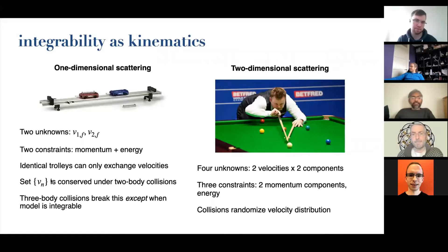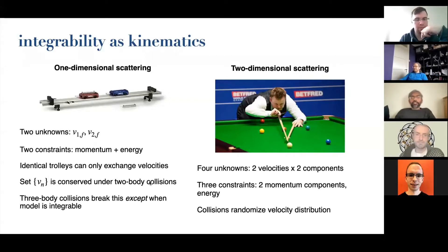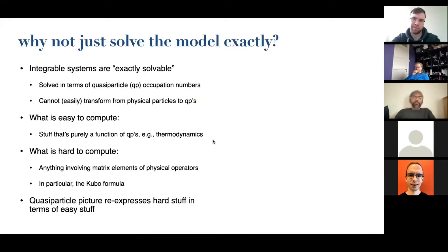Three-body collisions generically break this feature, but in many models of interest like the Heisenberg and Hubbard models they don't, so the model is integrable and this trolley picture works even at finite densities. Of course this is not how generic scattering works in dimensions greater than one, so you don't really have non-trivial integrable systems in dimensions greater than one.